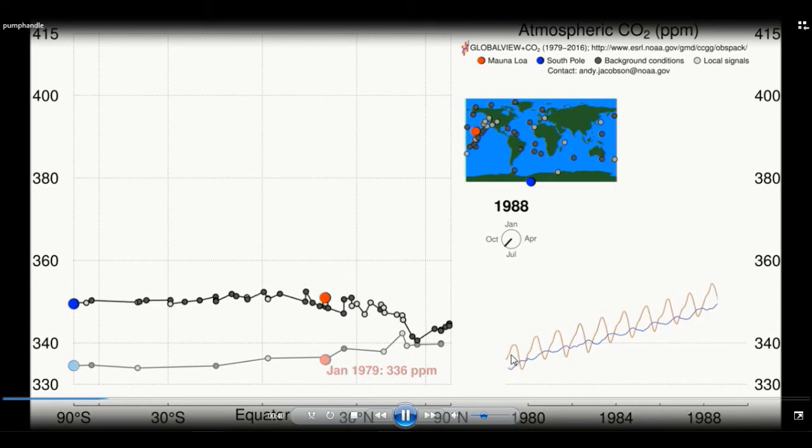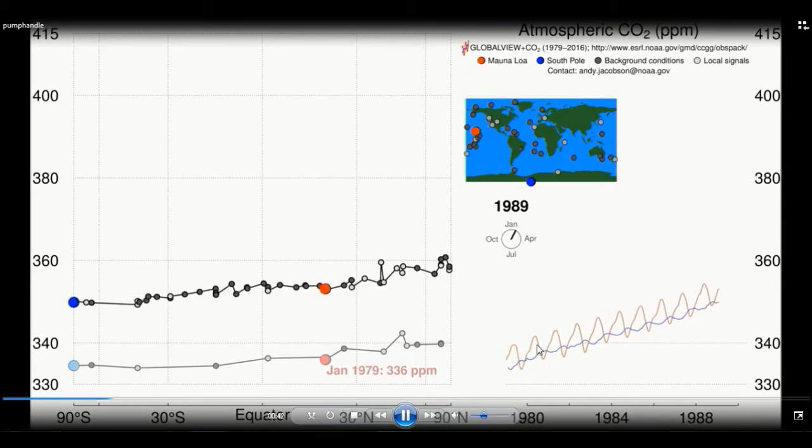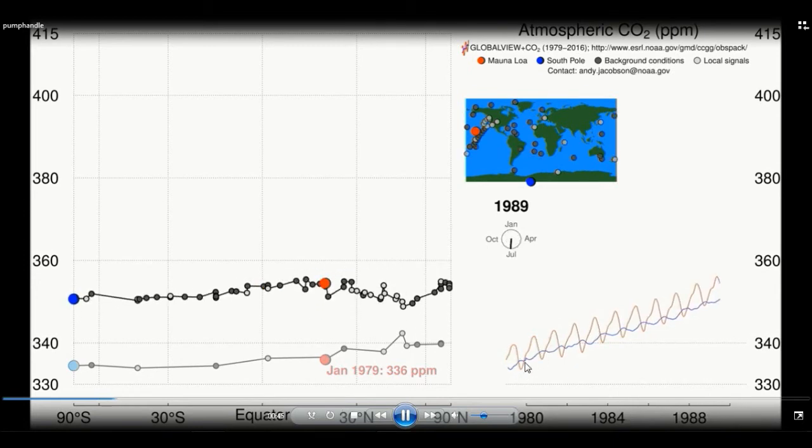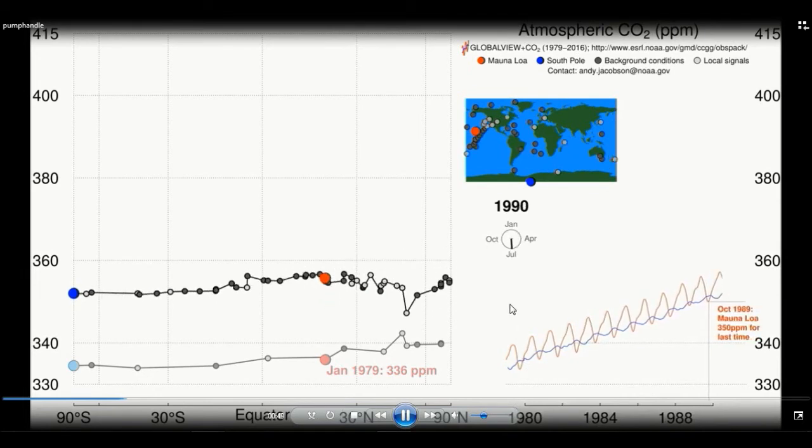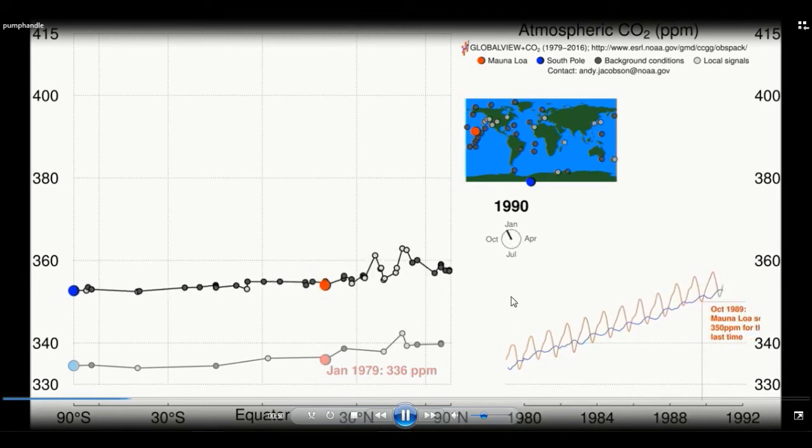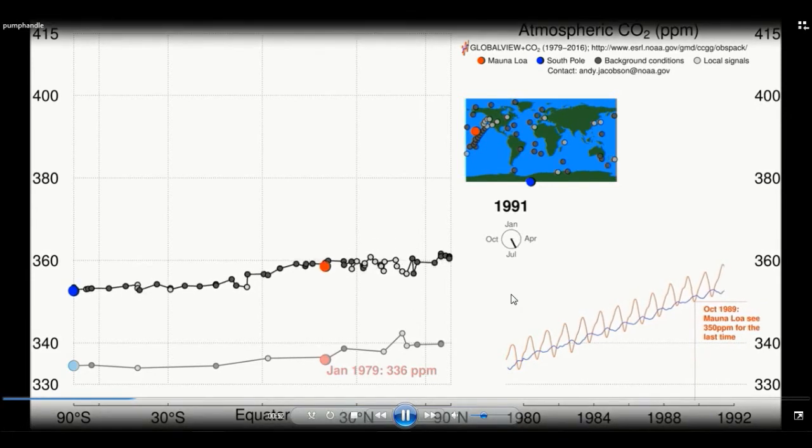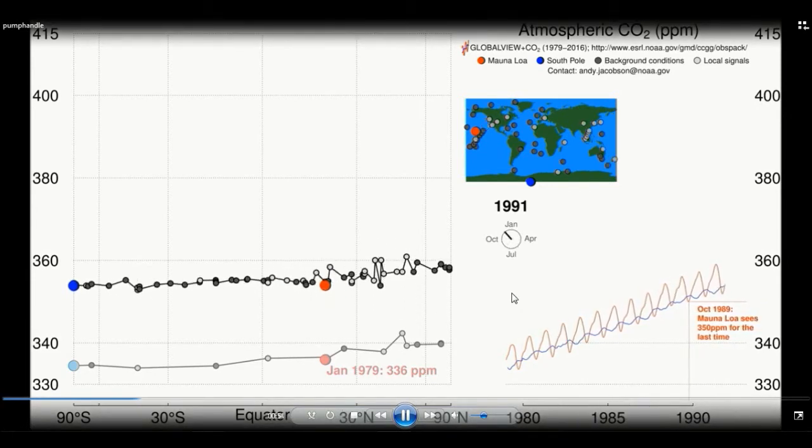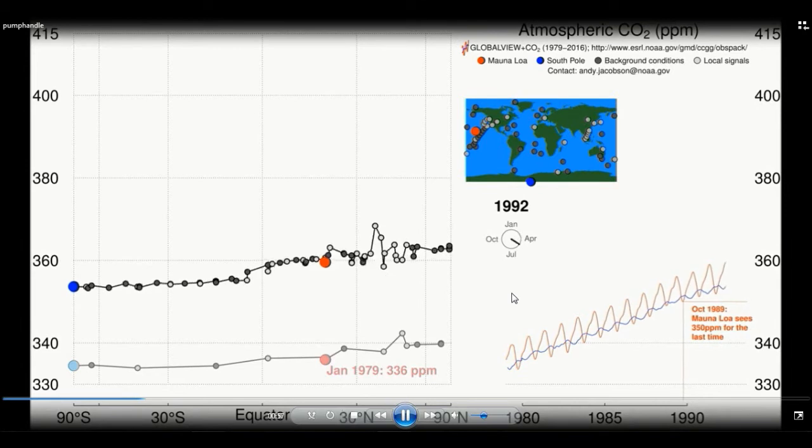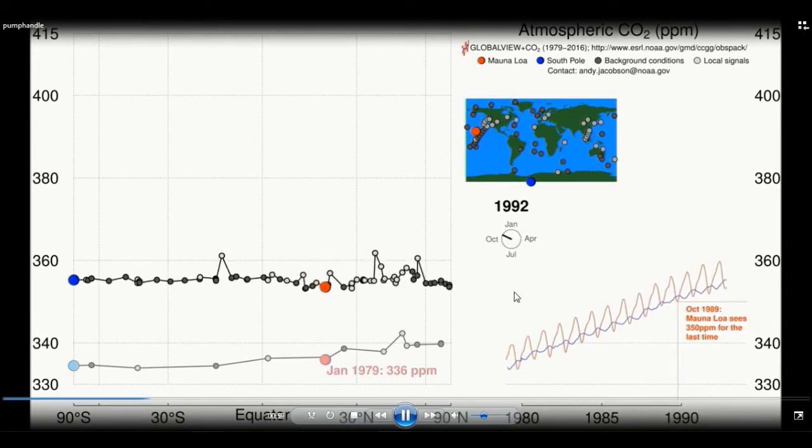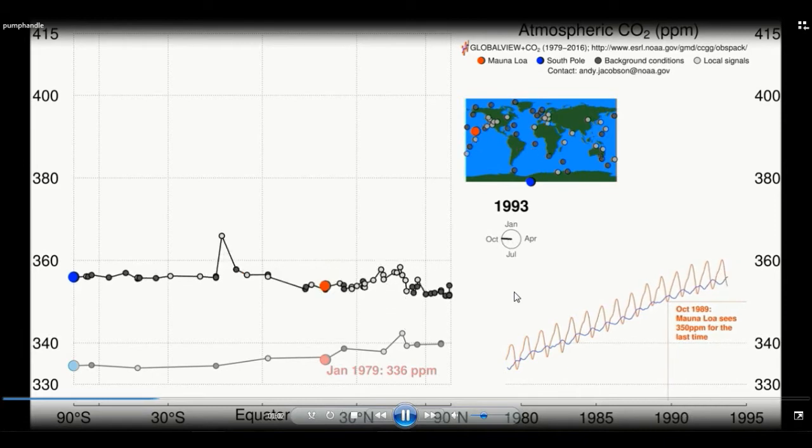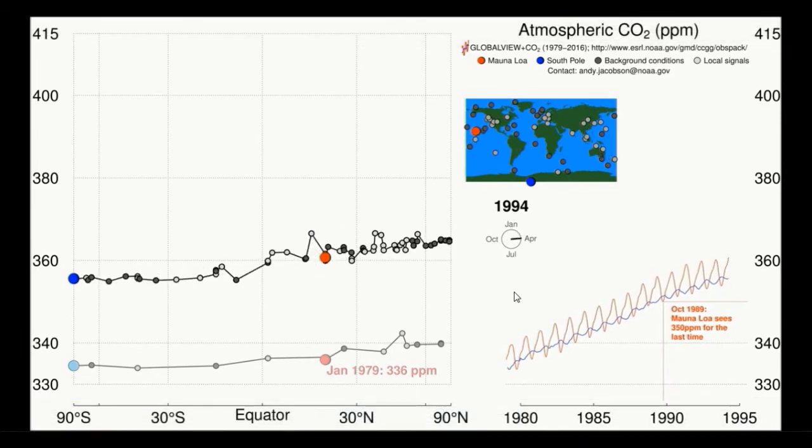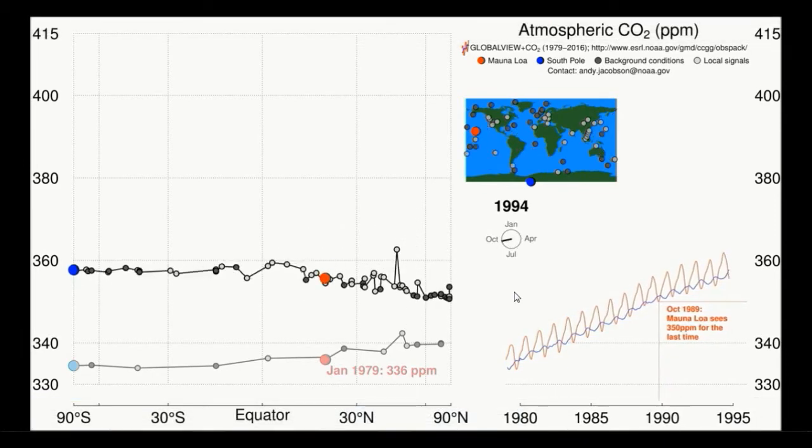You can see that there is a wave in the Mauna Loa site as carbon dioxide concentrations go up and down in a seasonal cycle. In the spring and summer the plants in the northern hemisphere grow and they make leaves and flowers. They take in carbon dioxide to do that and that causes carbon dioxide concentrations in the atmosphere to decrease.